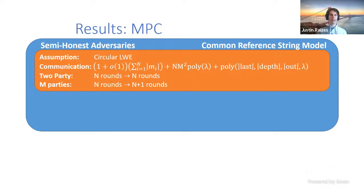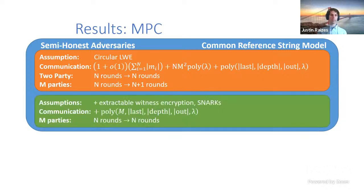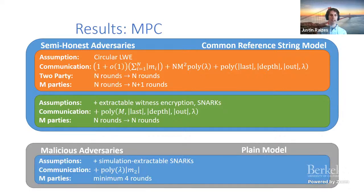Assuming the hardness of circular learning with errors, we achieve communication complexity that is asymptotically the communication complexity of the insecure protocol being compiled, plus some additional overhead terms. We do incur a polynomial blowup with respect to the security parameter lambda in terms of the last-message depth of the output circuit and size of the output. Overcoming this overhead without adding additional rounds requires some form of program obfuscation.